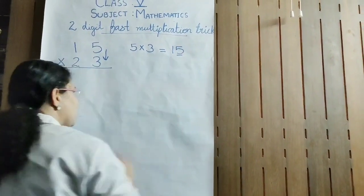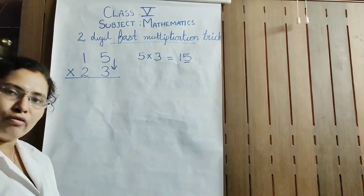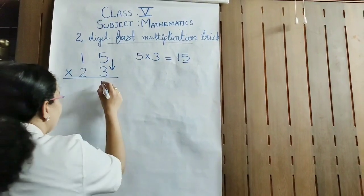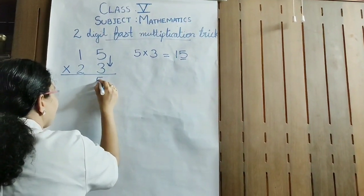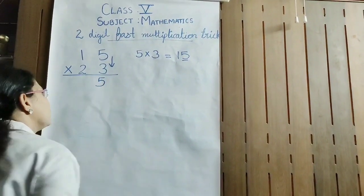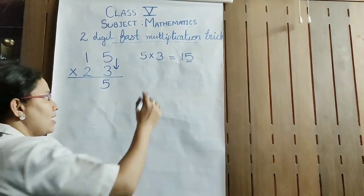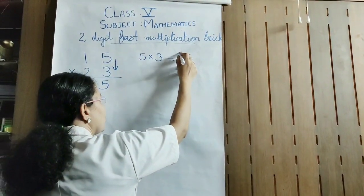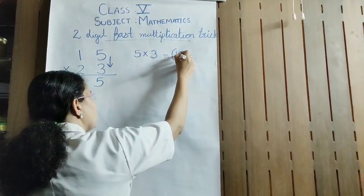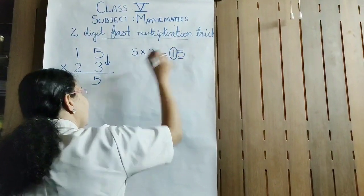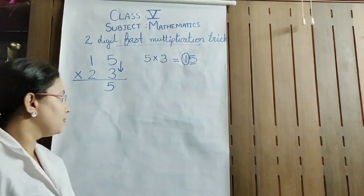Here the 1's place number is 5, so the unit's place number — 1's place number — I am writing here. And there is one more digit, that is 1, that will be remaining as carry.